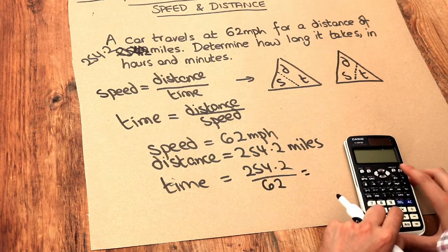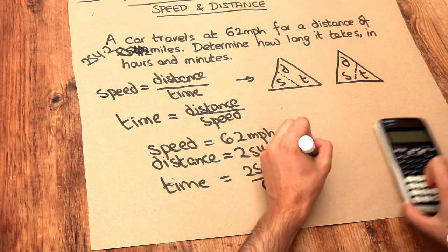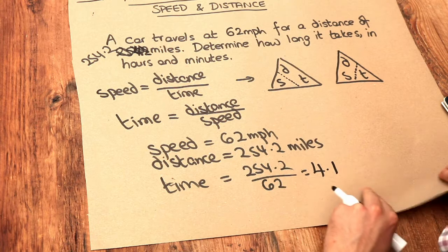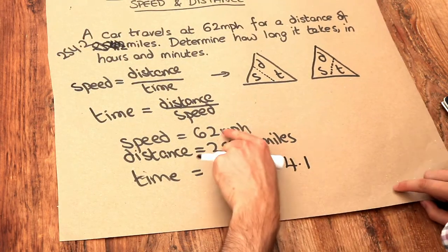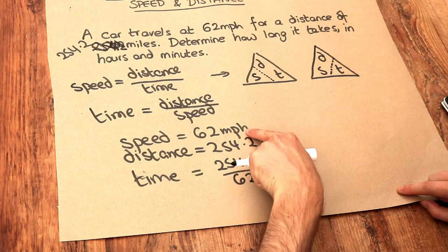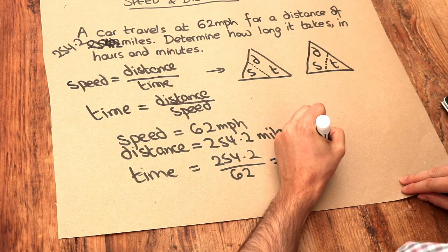Let's put that on our calculator. And that gives you 4.1. And let's think about the unit. This is miles per hour, and that's in miles. So we can see we've got per hour here. So this has got to be in hours.